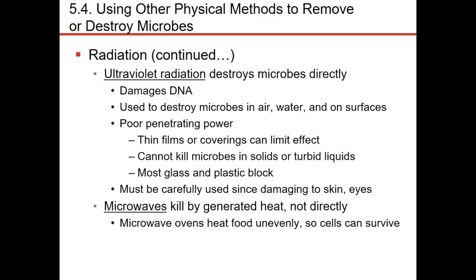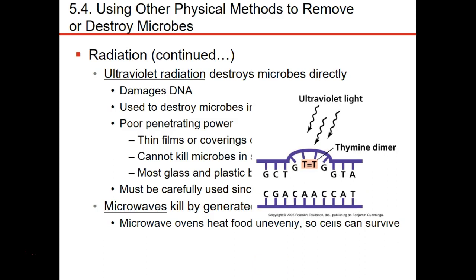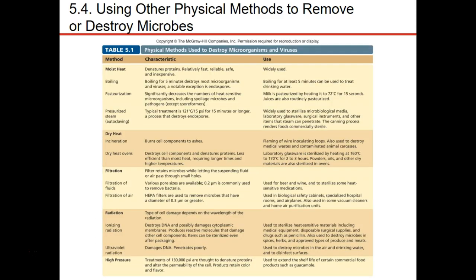Ultraviolet radiation damages DNA. It does not damage the plasma membrane, but what it does is cause thymine dimers to form. Wherever we have two thymine bases next to each other on our DNA, the thymine will bind together, and that causes problems for microorganisms because they can no longer replicate their DNA and therefore can no longer replicate their cells. That's what a thymine dimer looks like. We'll stop here and get into chemical mechanisms next.